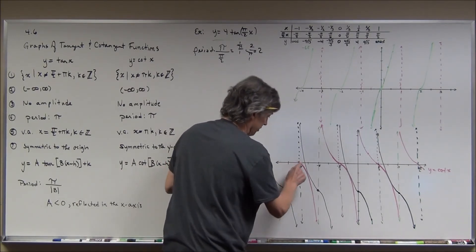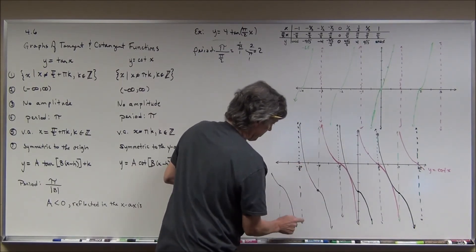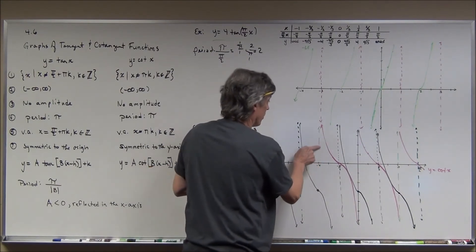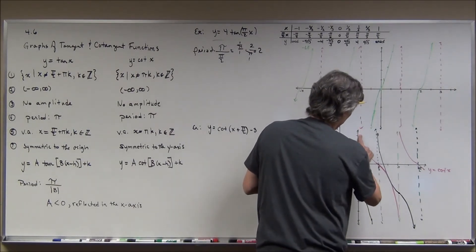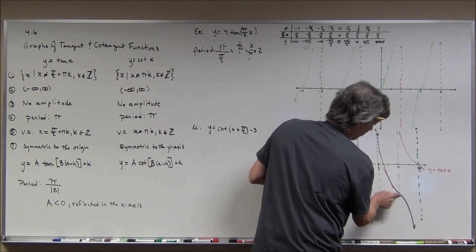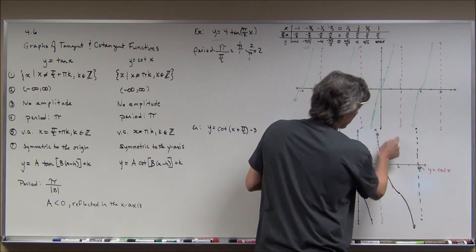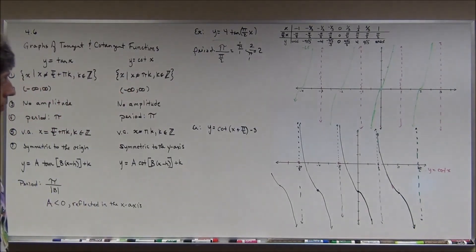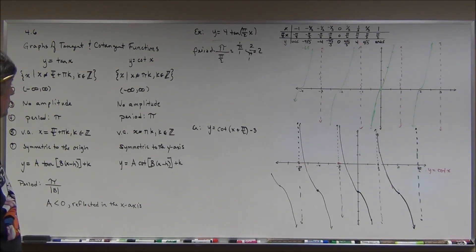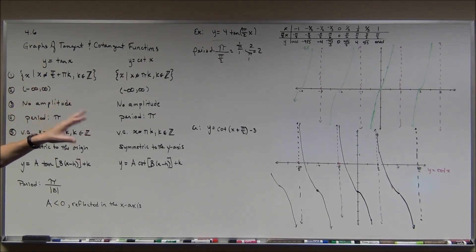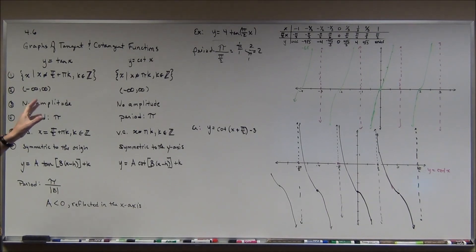It's a busy graph, so typically at this point I get my eraser and remove everything except the final product so you can see the result more clearly. Once you've graphed sine, cosine, tangent, cotangent, secant, and cosecant, it gives you real insight into these functions. The key is to remember domains and ranges, especially vertical asymptotes, and to be aware that transformations will be involved — and that comes with practice, practice, practice.